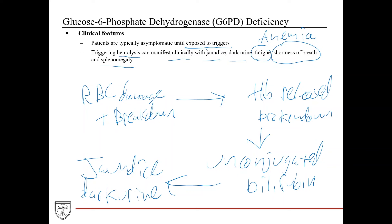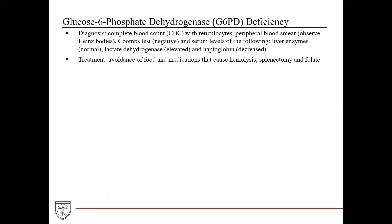A typical exam stem would describe a patient who was otherwise normal, developed some kind of infection or took one of the trigger medications, and then developed symptoms. You should be suspicious for G6PD deficiency. Diagnosis involves a CBC with reticulocytes, indicative of bone marrow activity, and a peripheral blood smear looking for Heinz bodies.